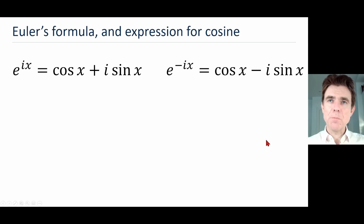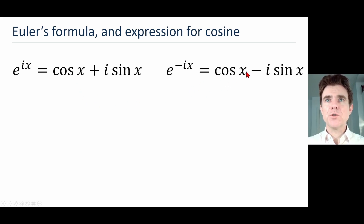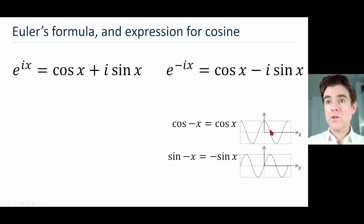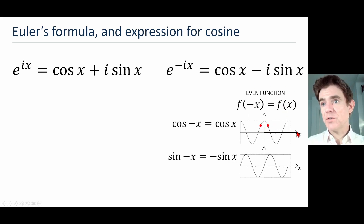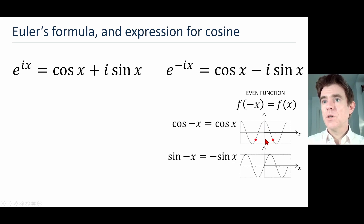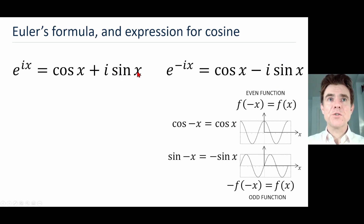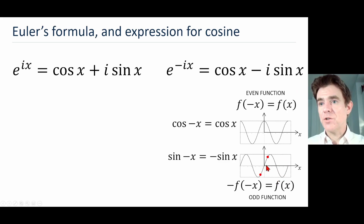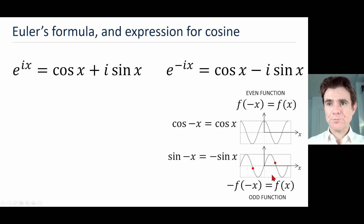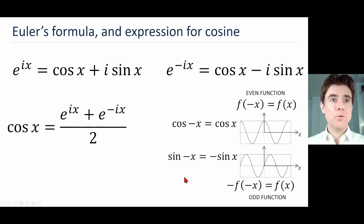We can look at e^(-ix), which uses a negative in the argument. Cosine x stays the same because it's an even function — cos(-x) = cos(x), meaning if you progress in the positive x direction and get a function value f, you get exactly the same value going in the negative x direction. The i sin x term becomes minus i sin x because sine is an odd function: if you progress in the positive x direction you get a function value f, but in the negative x direction you get the negative of that function value.